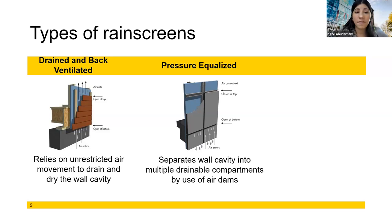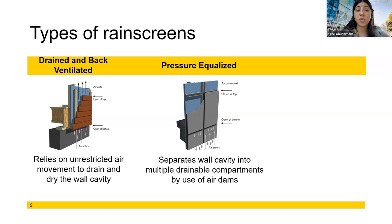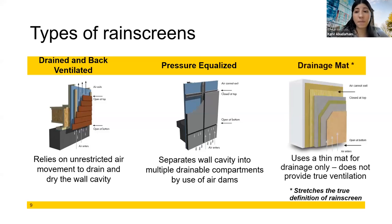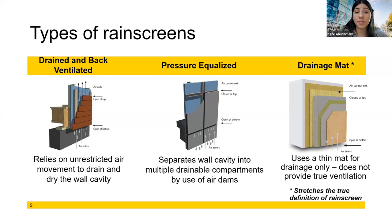A pressure equalized or closed joint rain screen doesn't necessarily require air dams — it just means you are restricting or controlling how much movement and in which direction. And then there is a type that is not a rain screen at all: it would not pass an AMA 508 or 509 test. There is no ventilation, no airflow — only a drainage mat, which provides a capillary leak function relying on gravity. It may manage moisture, but it is not a rain screen and would not pass the classification test.